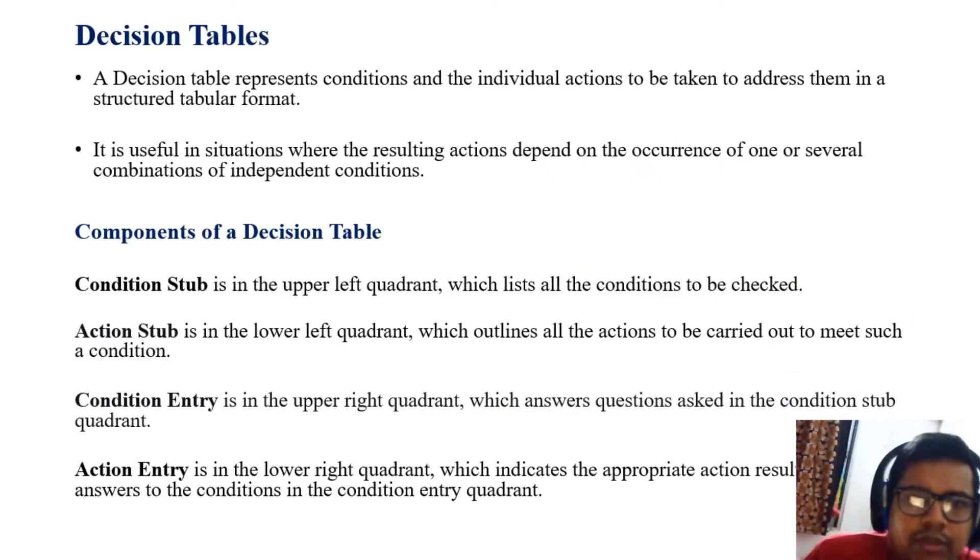Decision tables represent conditions and individual actions to be taken to address them in a structured tabular form. Decision tables are useful in situations where the resulting action depends on the occurrence of one or several combinations of independent conditions.